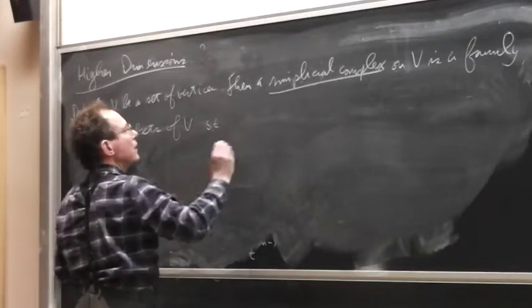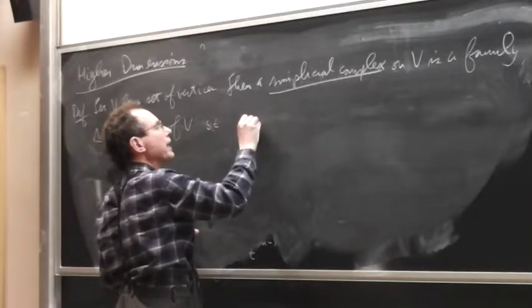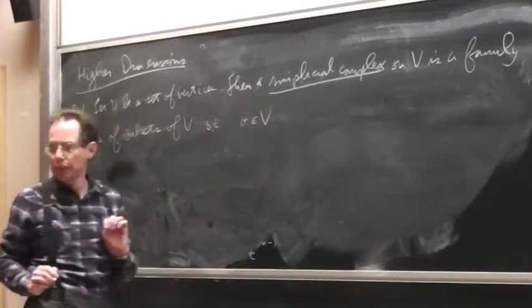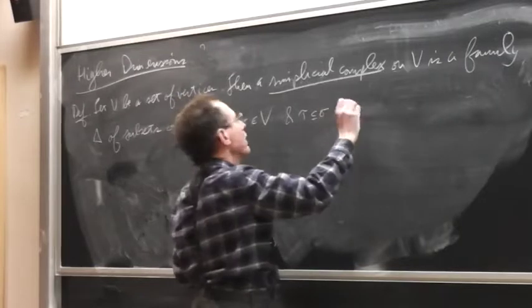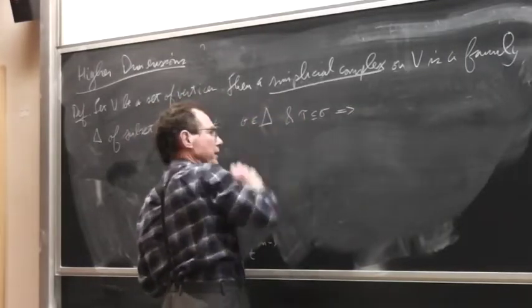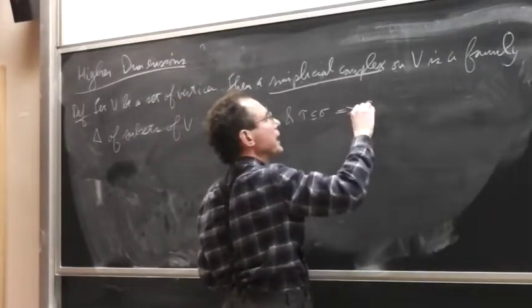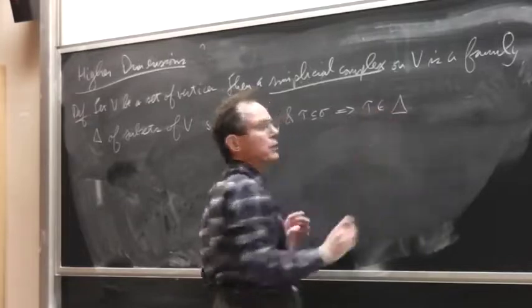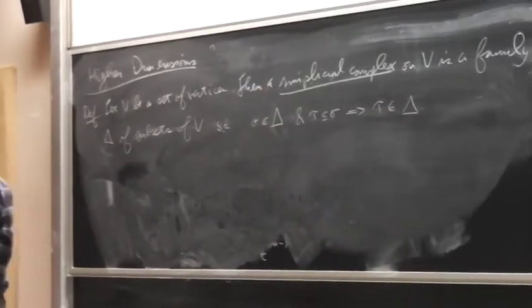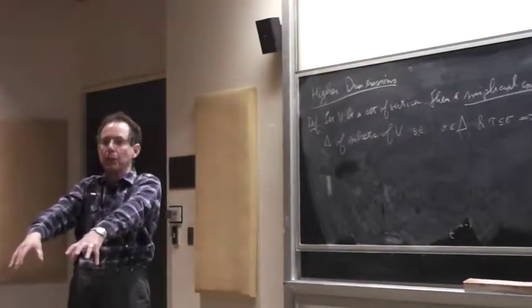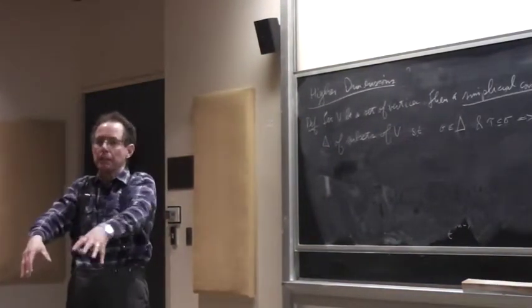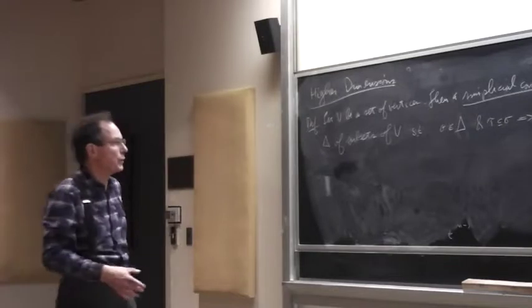So then a simplicial complex on V is a family delta, so we'll be using delta for simplicial complexes, of subsets of the vertex set. And the thing that makes it a simplicial complex is that if I take an element sigma in delta, and I take any subset of it, then that subset must also be a delta. So it's a set of subsets of V that's closed under taking subsets. Or if you like to think in terms of Boolean algebras, it's a lower order ideal than the Boolean algebra, whichever algebra you want to think.